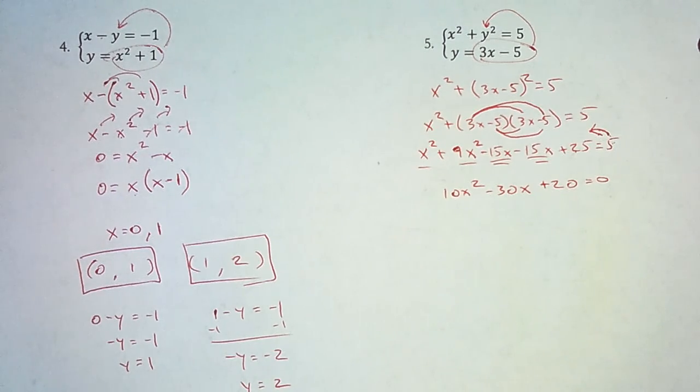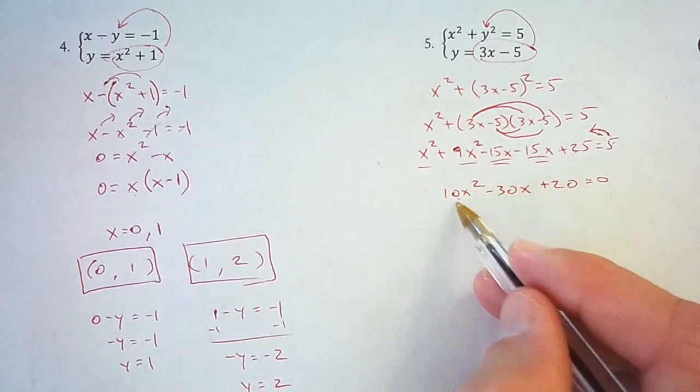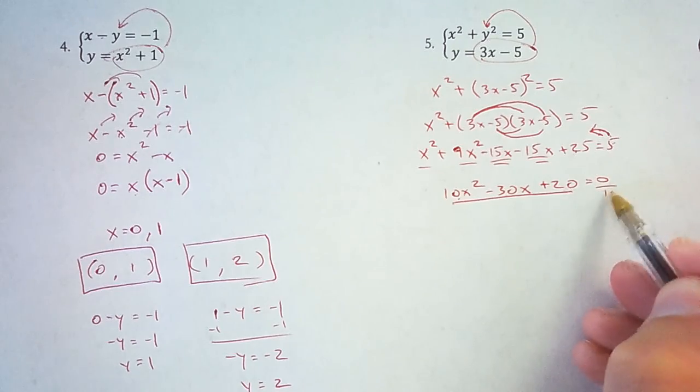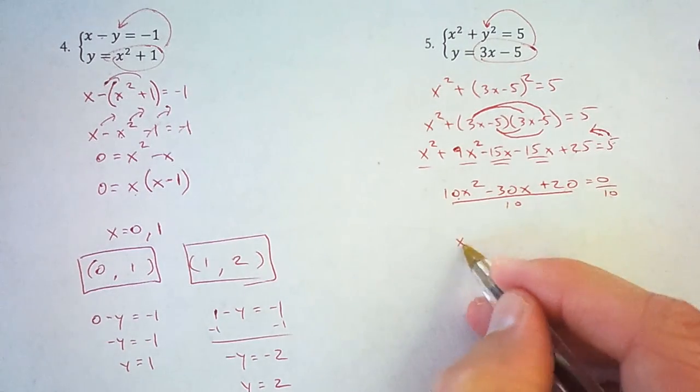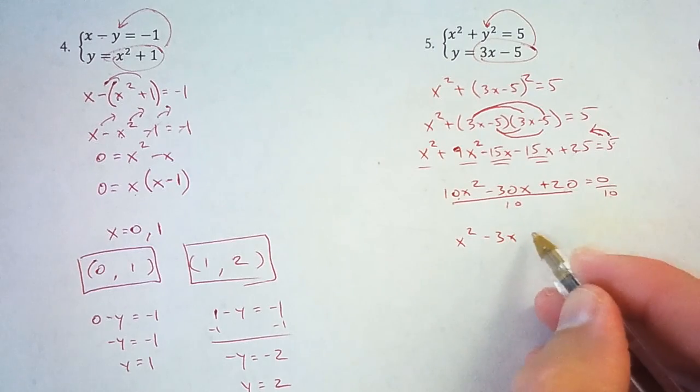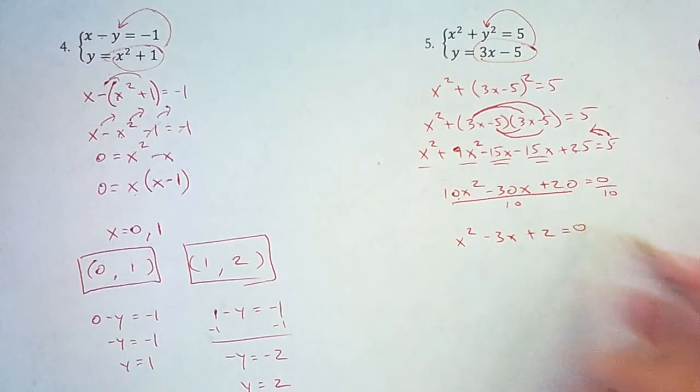Now let's look for a GCF. So the greatest common factor of all three of these, they don't all have an x like we had over here, but they do all have a 10. And I think the easiest thing to do then would be to divide both sides by 10 and get x squared minus 3x plus 2 equals 0.